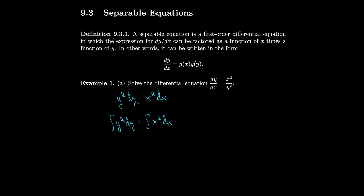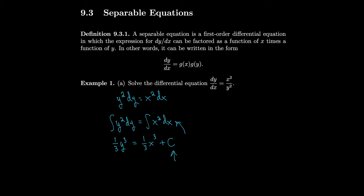We take the antiderivative: we get one-third y cubed plus c equals one-third x cubed plus c. Because we have c on both sides and they're potentially different constants, I can subtract them and move them to the other side to combine into one 'super c'. So I'll just leave c on one side, where this c equals whatever constant I get when I integrate minus whatever constant from the other side.